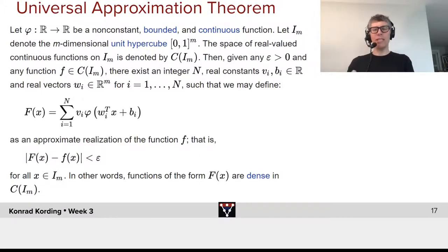Then, given any epsilon greater than 0 and any function f out of C(I_m), there exists an integer n, real constants v_i, b_i out of R and real vectors w_i, such that if we then define F(x) as basically just like a one-hidden layer neural network where we have the output with this arbitrary function of which all we know that it's non-constant, bounded, and continuous, we can then describe any function as the linear combination of these functions applied to linear combinations of the input.